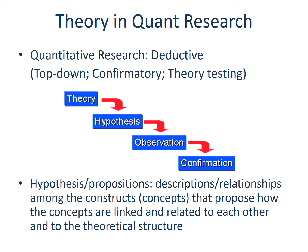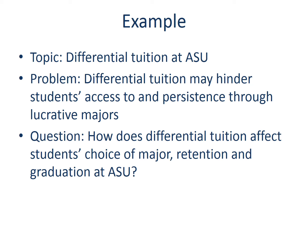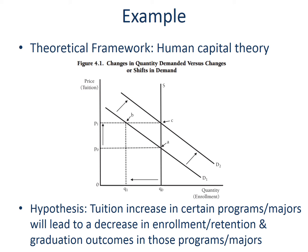As discussed previously, quantitative and qualitative research use theory very differently. In quantitative research, theory is something that is tested. Based on theory, researchers come up with hypotheses or propositions that describe how constructs are related. Applying this to our example study on the effect of differential tuition on students' choice of major, retention, and graduation: human capital theory explains that when price goes up, demand goes down. If we apply this theory, we hypothesize that tuition increases in certain programs or majors will lead to a decrease in enrollment, retention, and graduation outcomes in those programs and majors.